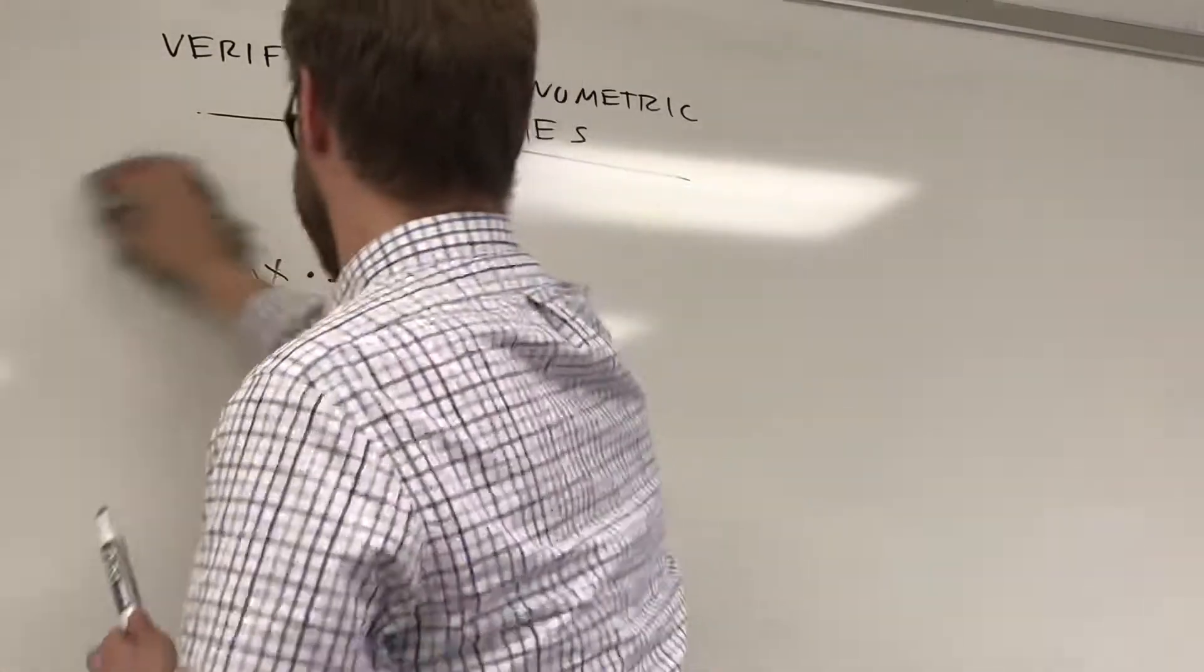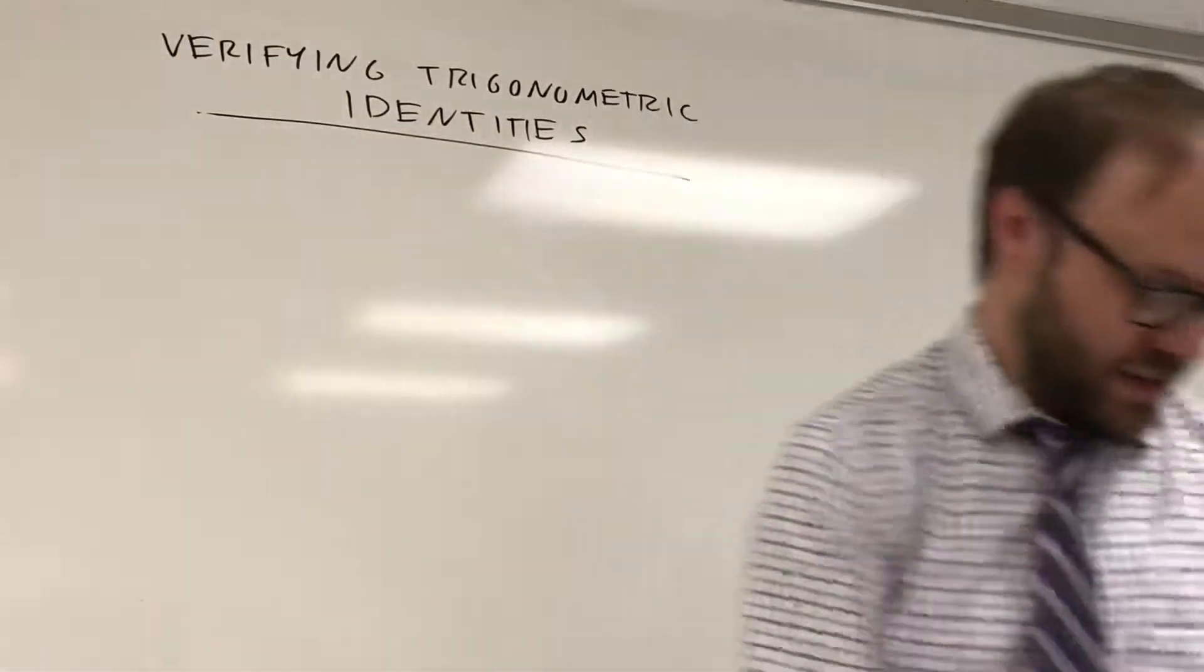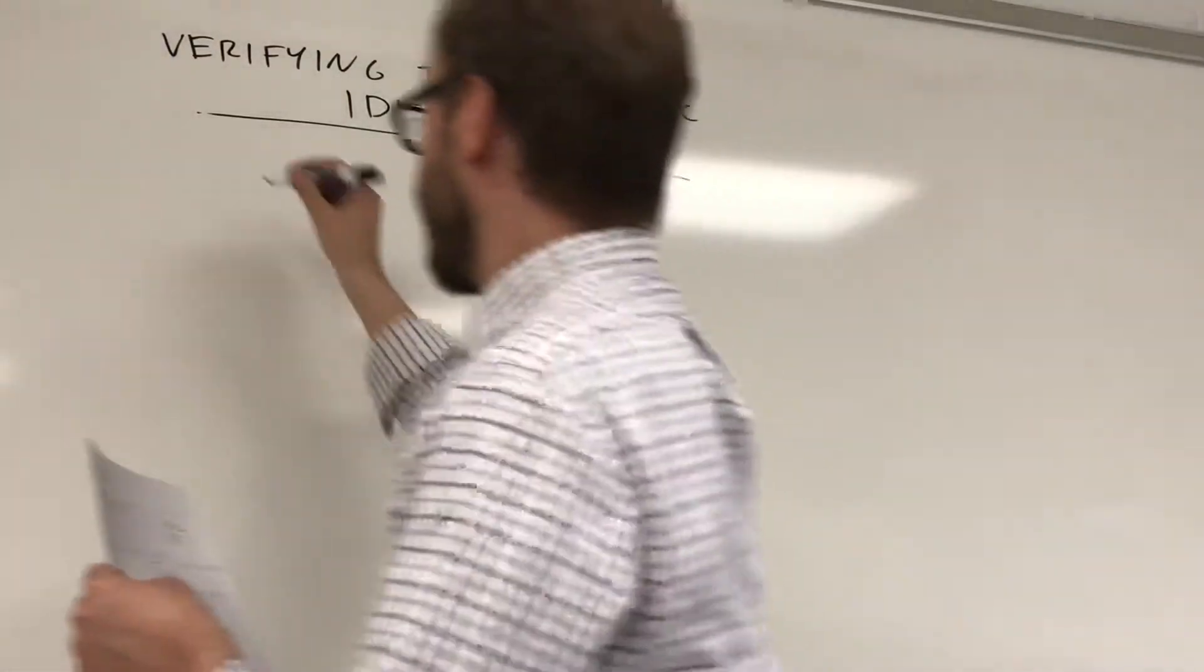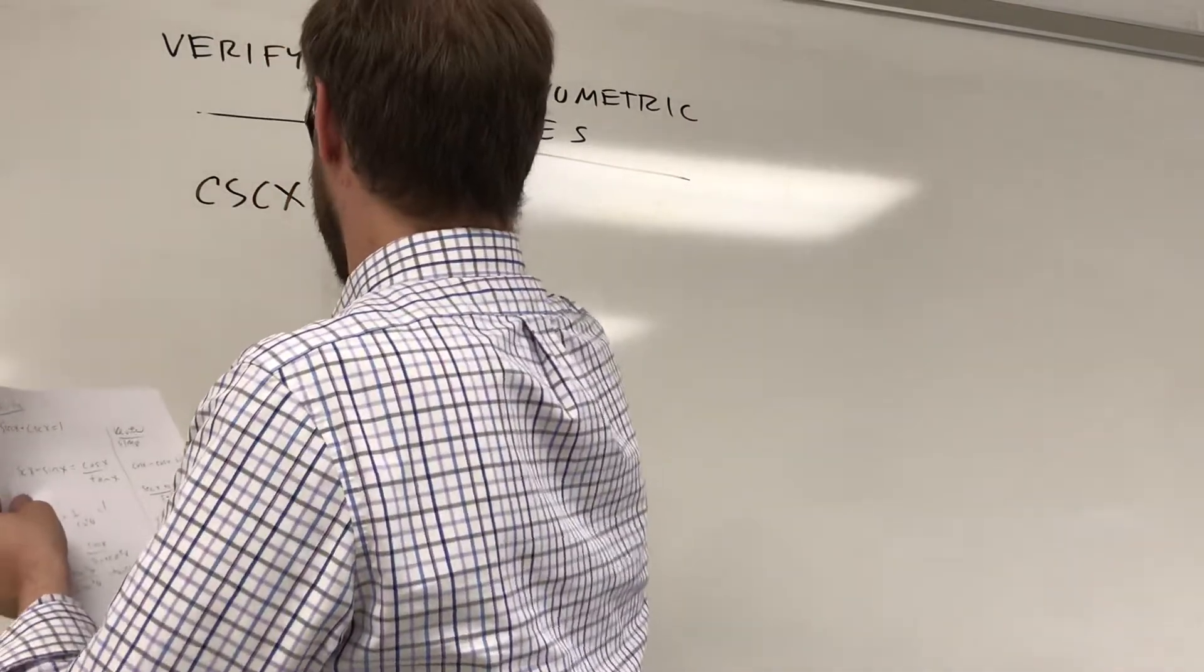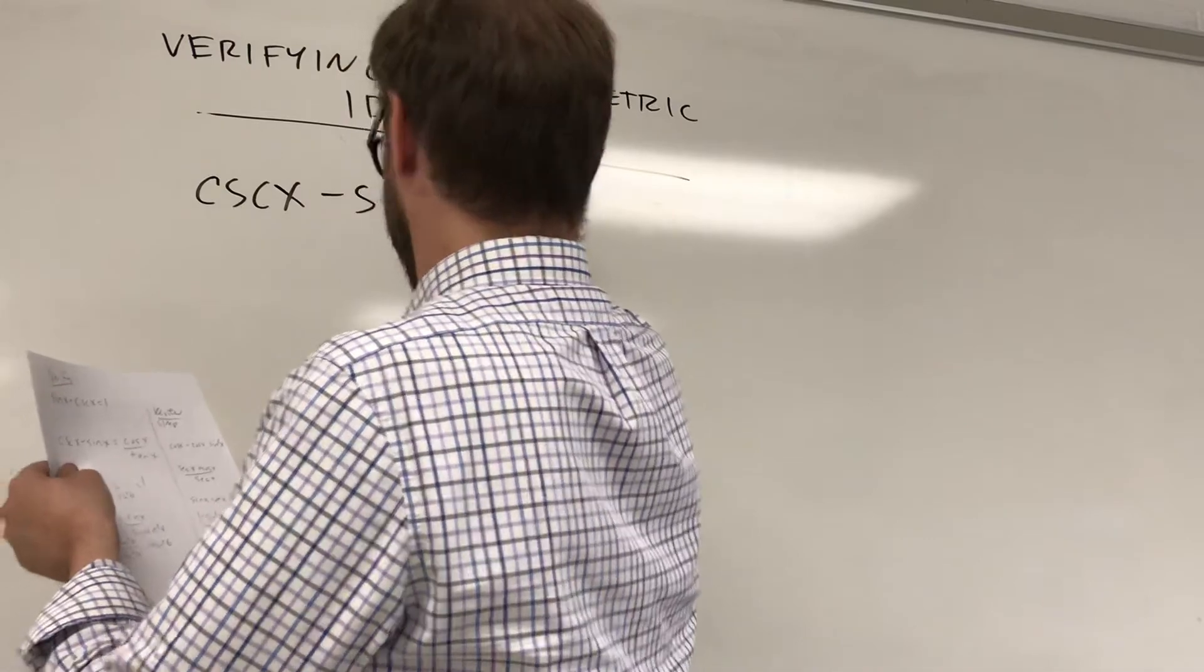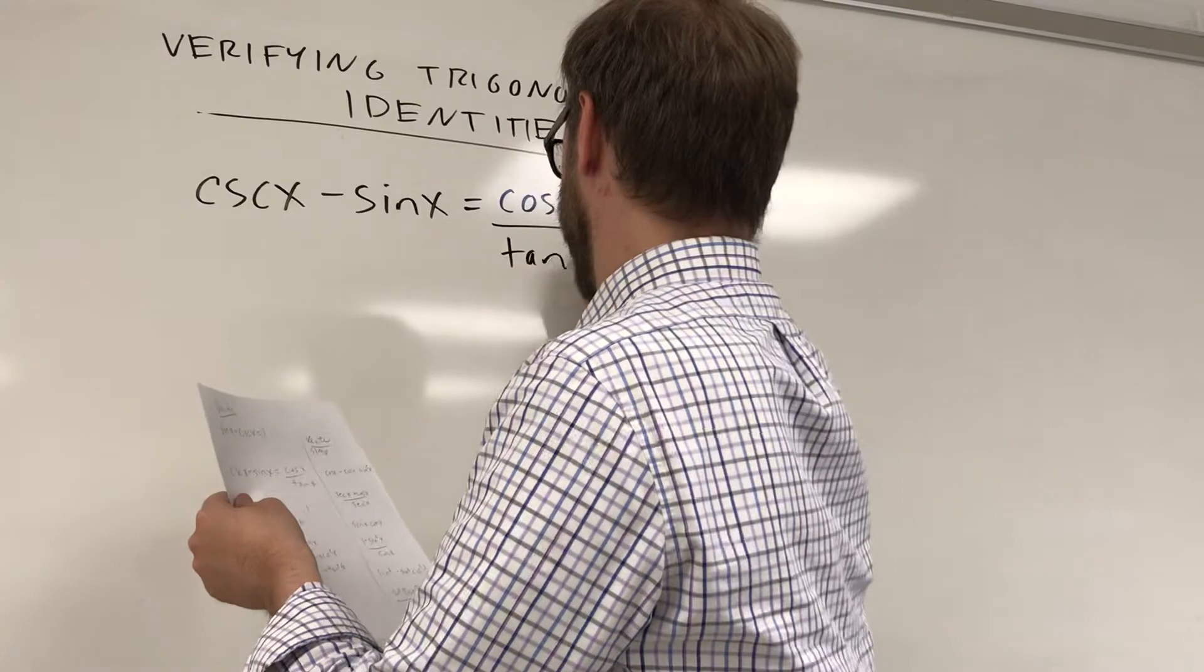The second one here that I'm gonna do is the cosecant of x minus the sine of x is equal to the cosine of x over the tangent of x.